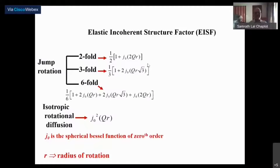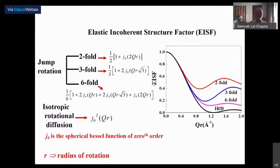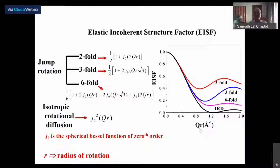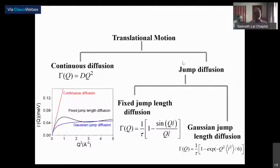The elastic incoherent structure factor can be easily modeled. For example, if you have a two-fold rotation it has a simple form involving a spherical Bessel function; three-fold or six-fold have different forms available. The elastic incoherent structure factor as a function of wave vector has somewhat different shapes, and therefore it is possible to identify the nature of motions — the geometrical nature of the dynamics involved. Here r is the radius of rotation.